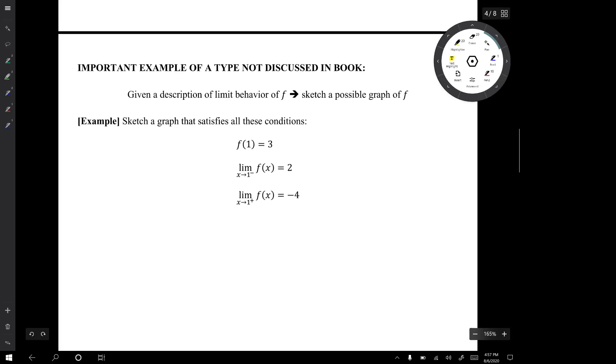So here's our example. Sketch a graph that satisfies all of these conditions. There are three conditions listed here. f(1) equals 3. The limit as x approaches 1 from the left of f(x) is 2. The limit as x approaches 1 from the right of f(x) is negative 4. And our job is to sketch a graph that satisfies those three conditions.